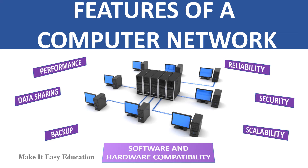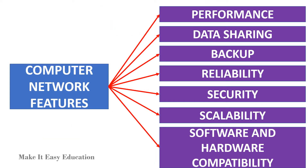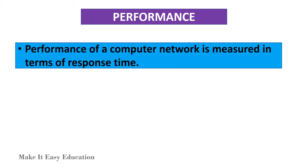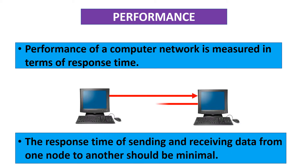Features of a computer network. Computer network features are: Performance, Data sharing, Backup, Reliability, Security, Scalability, and Software and hardware compatibility. Performance of a computer network is measured in terms of response time. The response time of sending and receiving data from one node to another should be minimal.